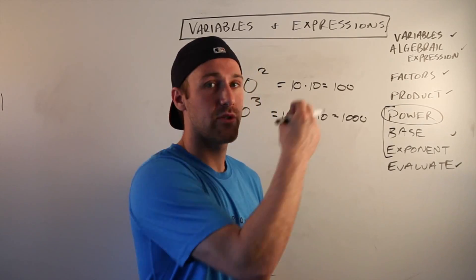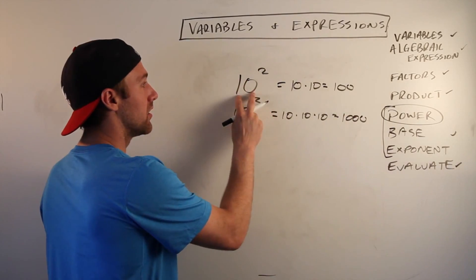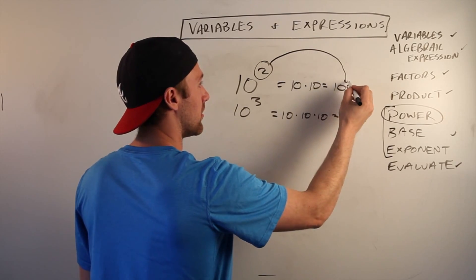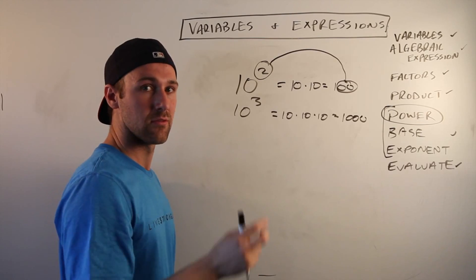You got 10 here squared. Look at our final answer. How many zeros do we have? Two.